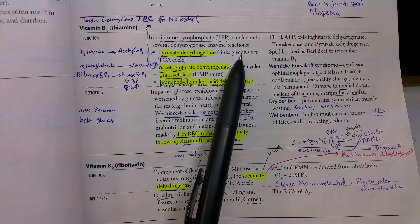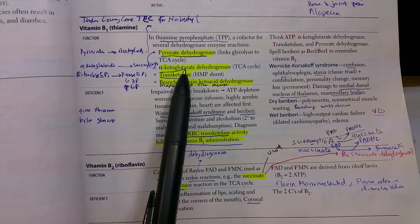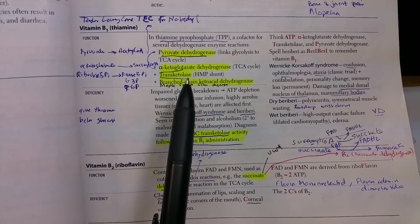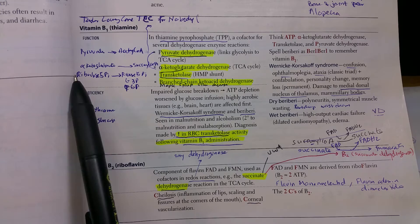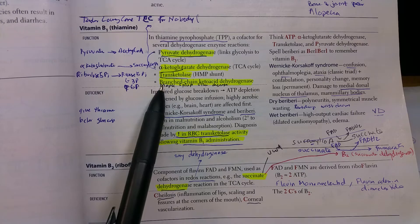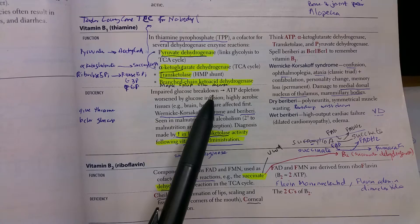Pyruvate dehydrogenase links glycolysis to the TCA cycle. It's very important for glucose metabolism, converting pyruvate to acetyl-CoA. In the Krebs cycle, alpha-ketoglutarate dehydrogenase is another important enzyme, converting alpha-ketoglutarate into succinyl-CoA. Transketolase in the hexose monophosphate shunt transfers ribulose 5-phosphate into ribose 5-phosphate, G3P, and fructose 6-phosphate. Another important enzyme is branched-chain ketoacid dehydrogenase, which is very important in maple syrup urine disease.